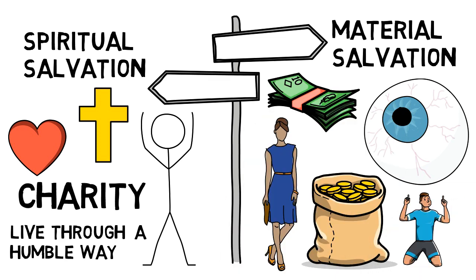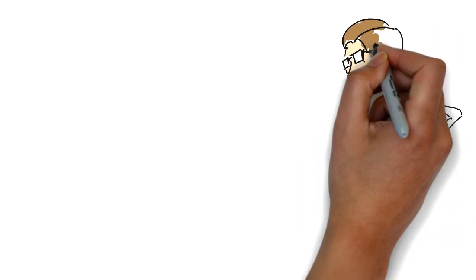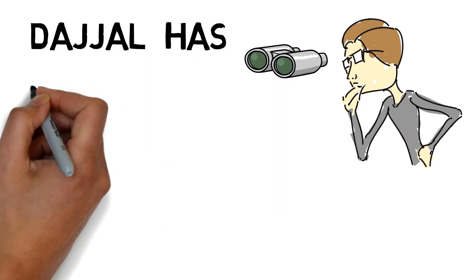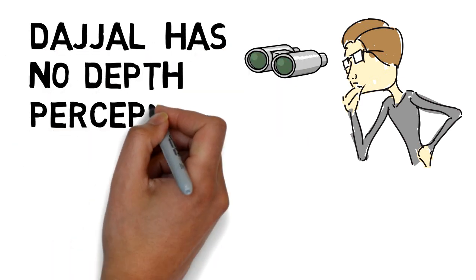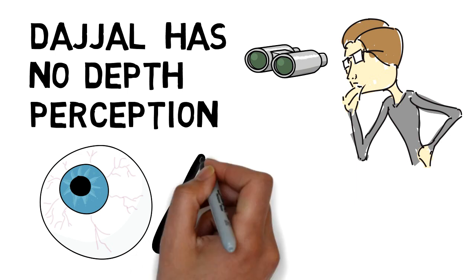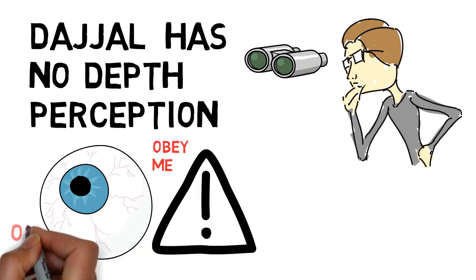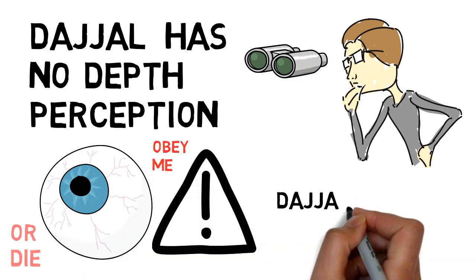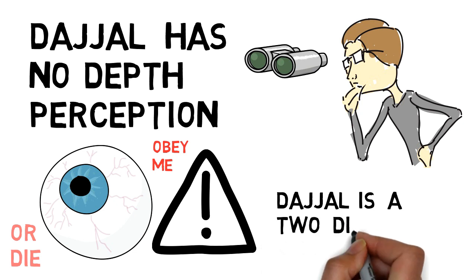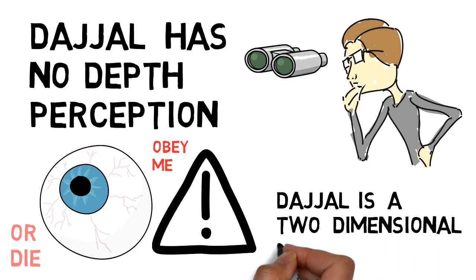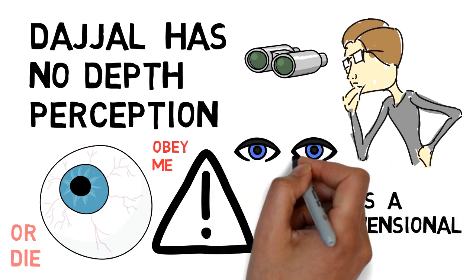And also the idea of being one-eyed is that part of binocular vision is depth perception, which you lose with one eye. And so the idea that the Dajjal or the antichrist does not have depth perception. He's a two-dimensional being. He sees things in two dimensions.